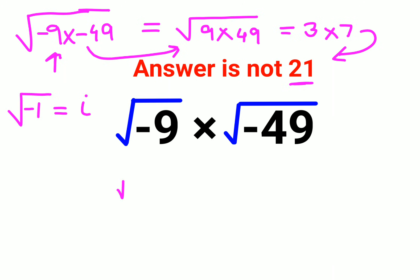So here we will write root of negative 9 as 9 into minus 1. Similarly, root of negative 49 can be written as 49 into minus 1.